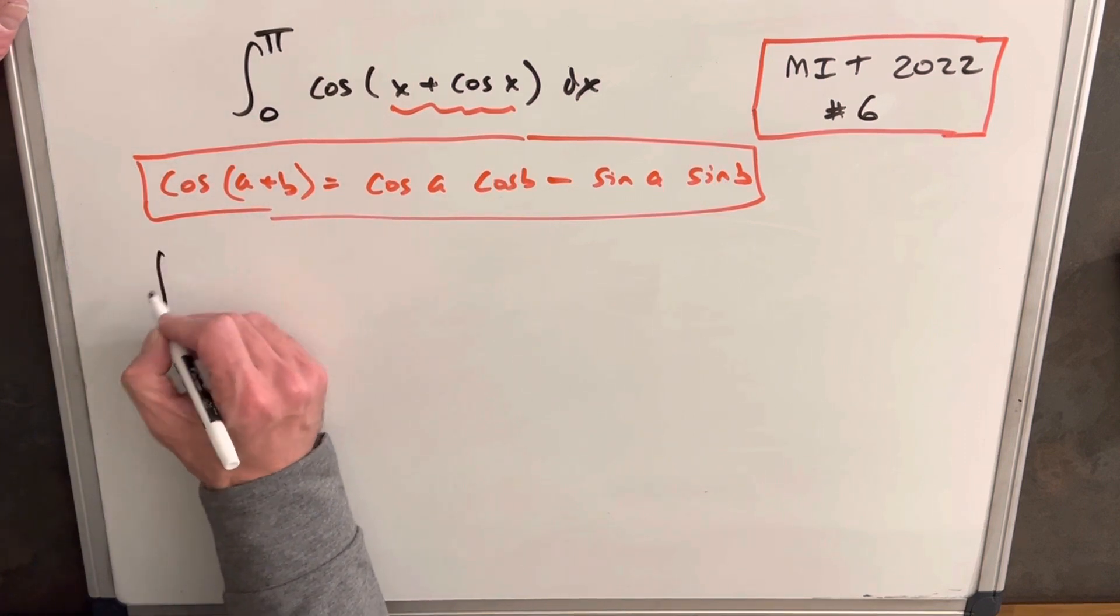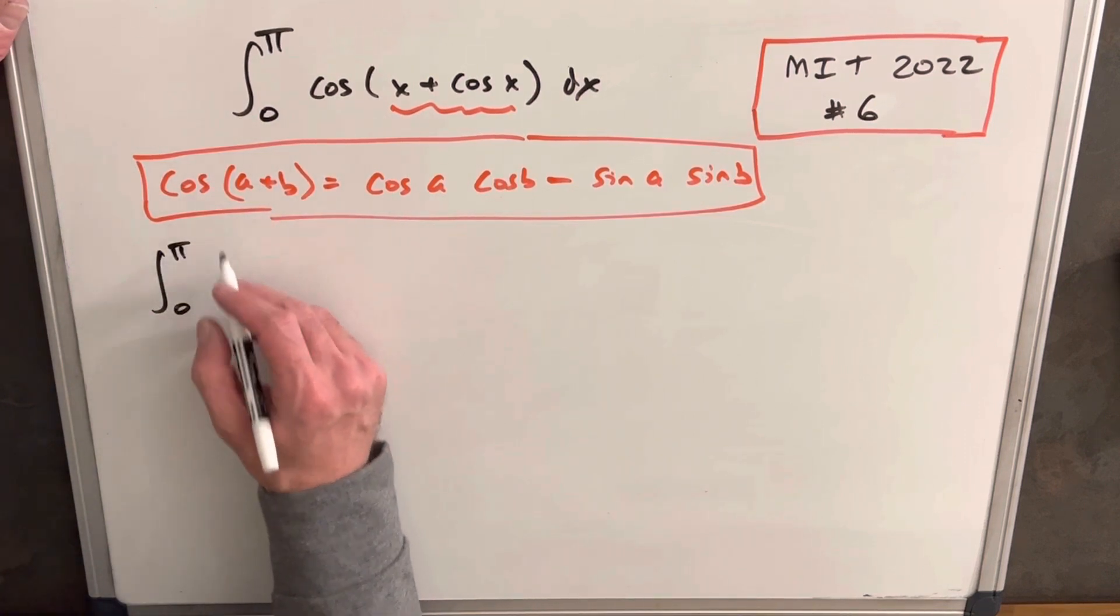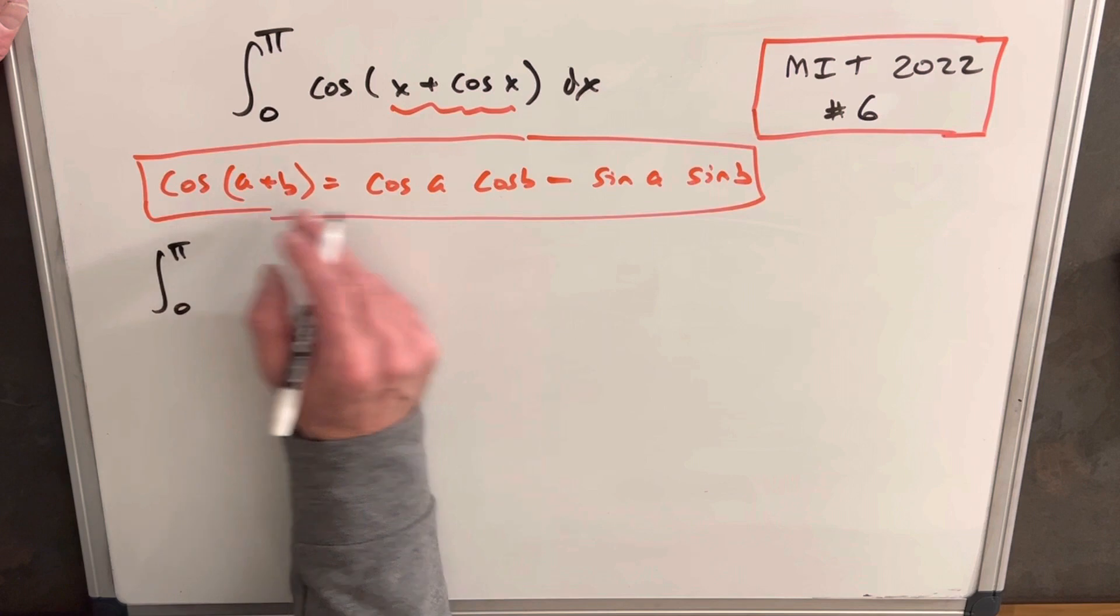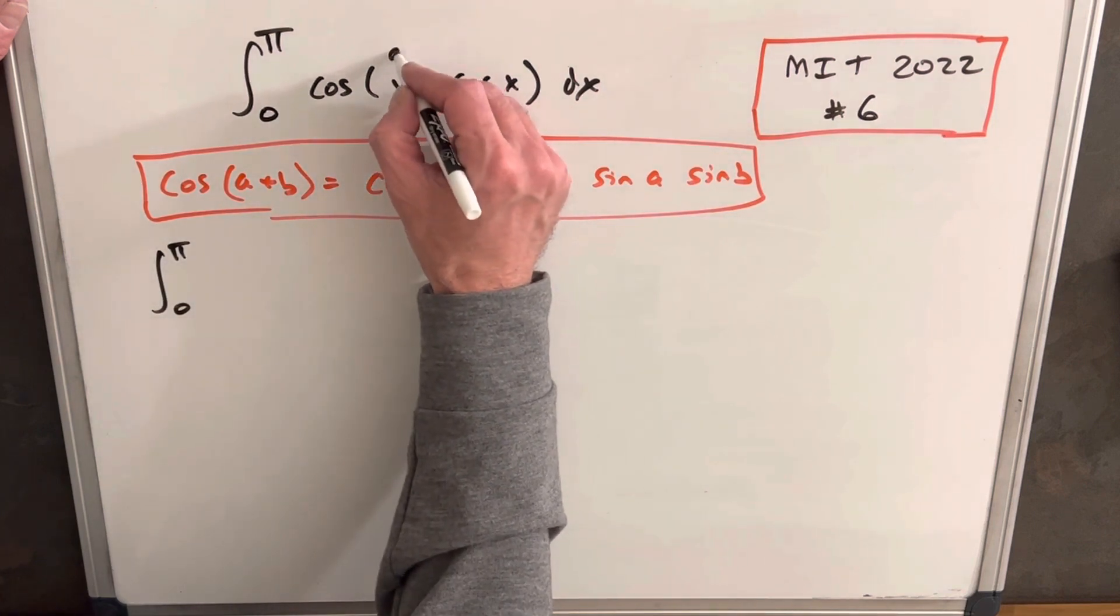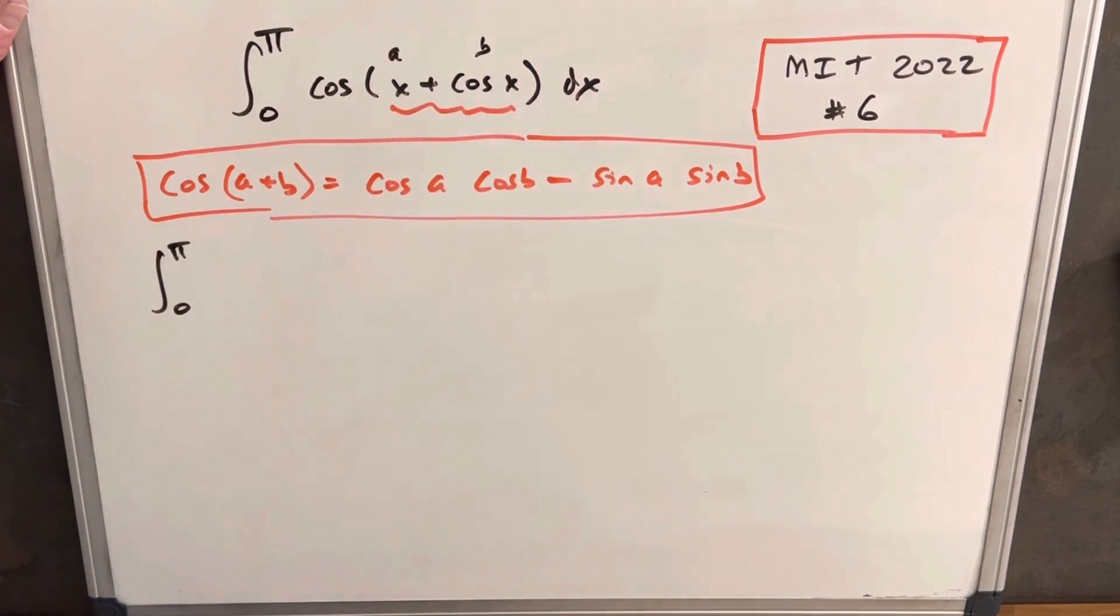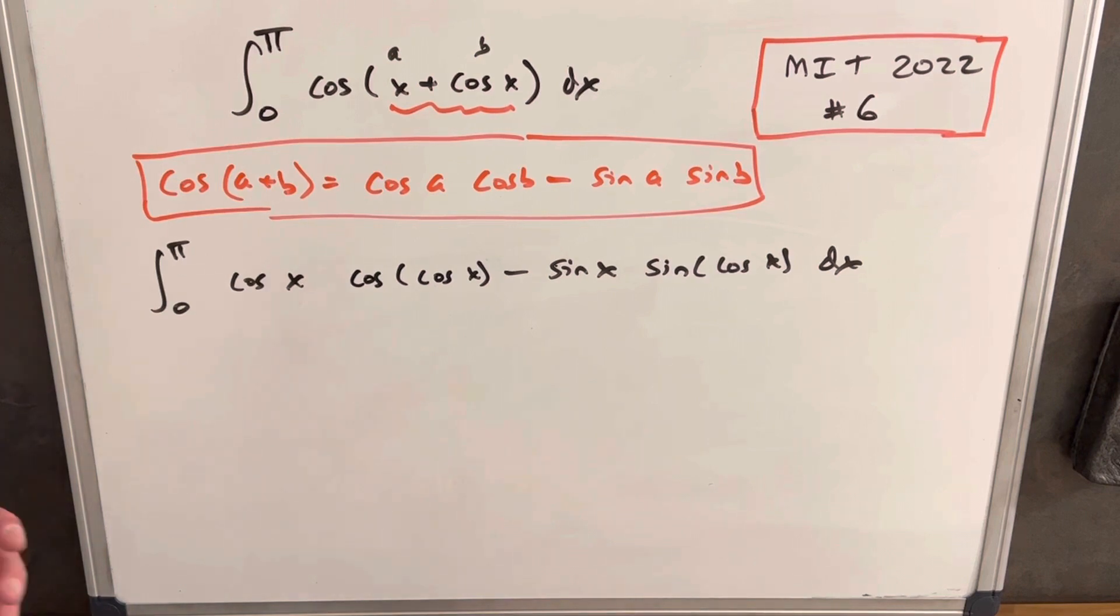So doing that, let's rewrite our integral. We're going to have pi to 0 still, and we're going to have cosine. So this is going to be our a right here, and this is going to be our b. And now at this point, we've solved everything and this is going to be pretty easy to integrate.